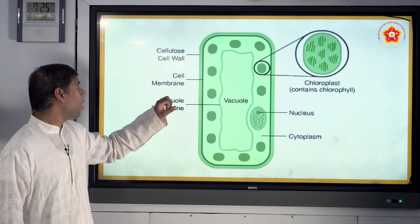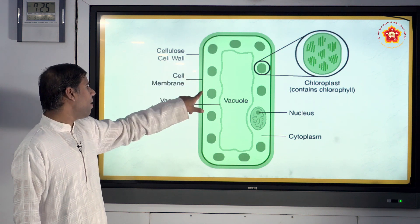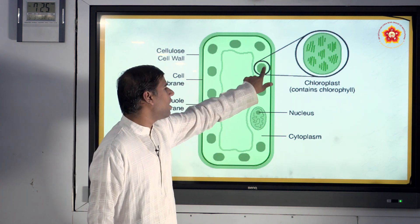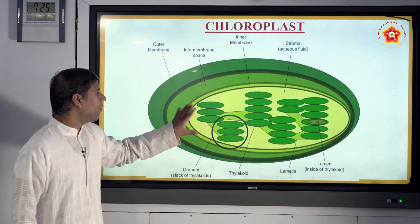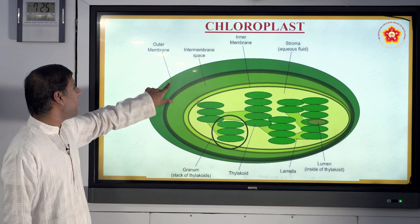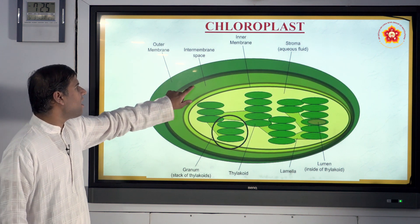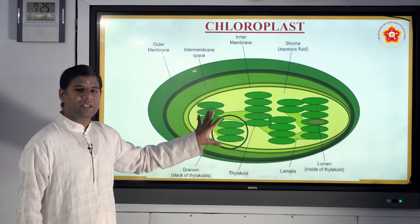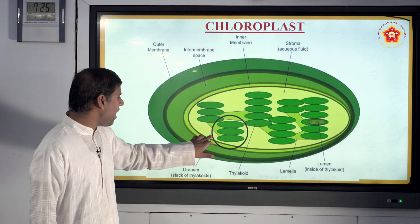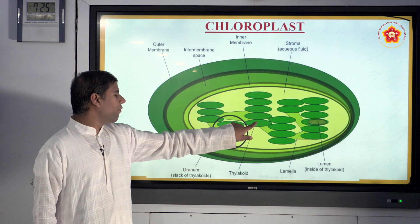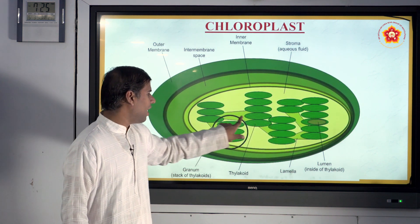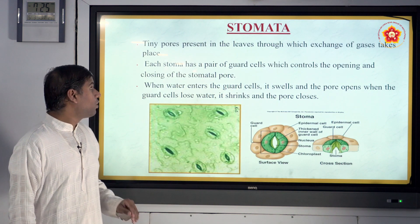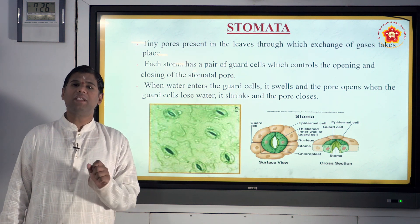In the enlarged view of a cell, you can see the cellulose wall, cell membrane, vacuole, nucleus, chloroplast containing chlorophyll, and cytoplasm. In the enlarged view of the chloroplast: there is an outer membrane, inter-membrane space, inner membrane, aqueous stroma fluid, and grana. Enlarging the granum you see thylakoids connected by lamella, with a lumen inside each thylakoid.